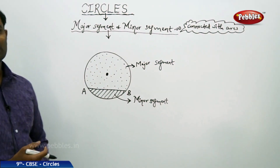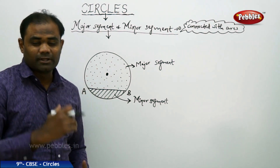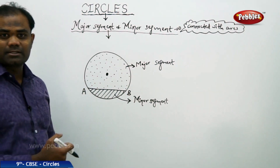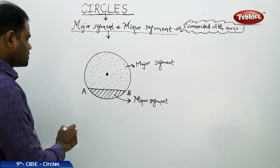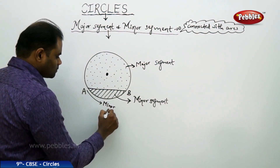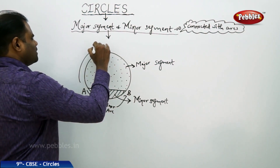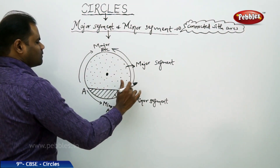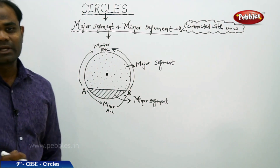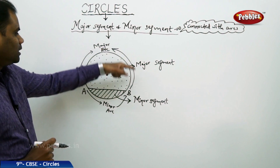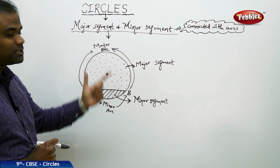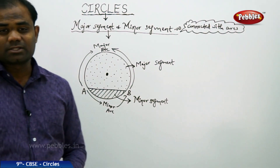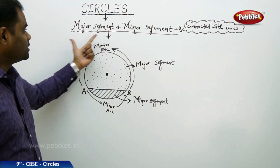Now comes the question of how we connect segments with arcs. The major arc is the arc which is bigger in size, and the minor arc is the arc which is smaller in size. The arc of the major segment is the major arc, and the arc of the minor segment is the minor arc. That is how we understand major and minor arcs connected with major and minor segments.